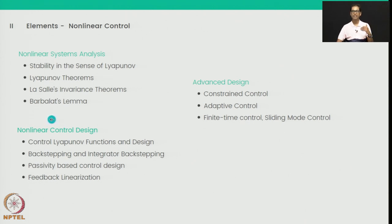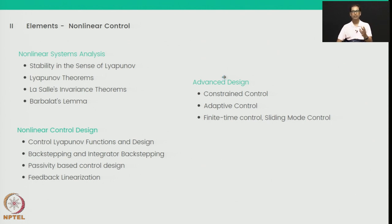There are also advanced design methods we will look at. The first is constrained control — if you want your control system to have safe behavior, such as avoiding collisions or not harming humans during interaction, you are in the domain of state-constrained control. Then there is adaptive control for systems with uncertainties and unknowns, and finally finite time and sliding mode control, which have disturbance rejection properties.